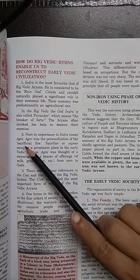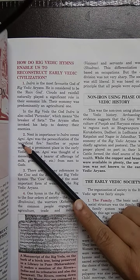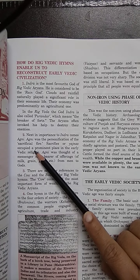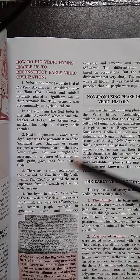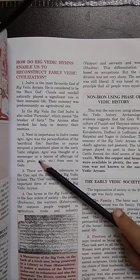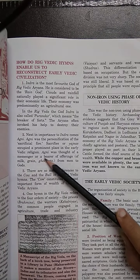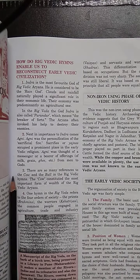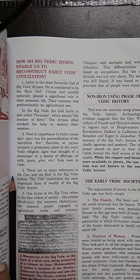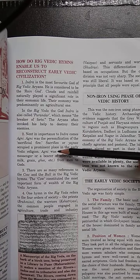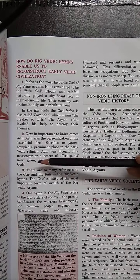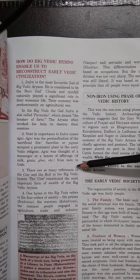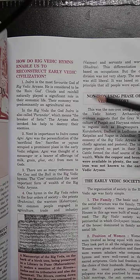Second in importance after Indra came Agni. Agni was the personification of sacrificial fire and had a very important place in Vedic religion during Yajnas or other sacrifices. Agni was thought of as a messenger or bearer of offerings. If they wanted to give something to a god, they would offer milk, grain, or ghee into the sacrificial fire, believing their offerings would reach their god.